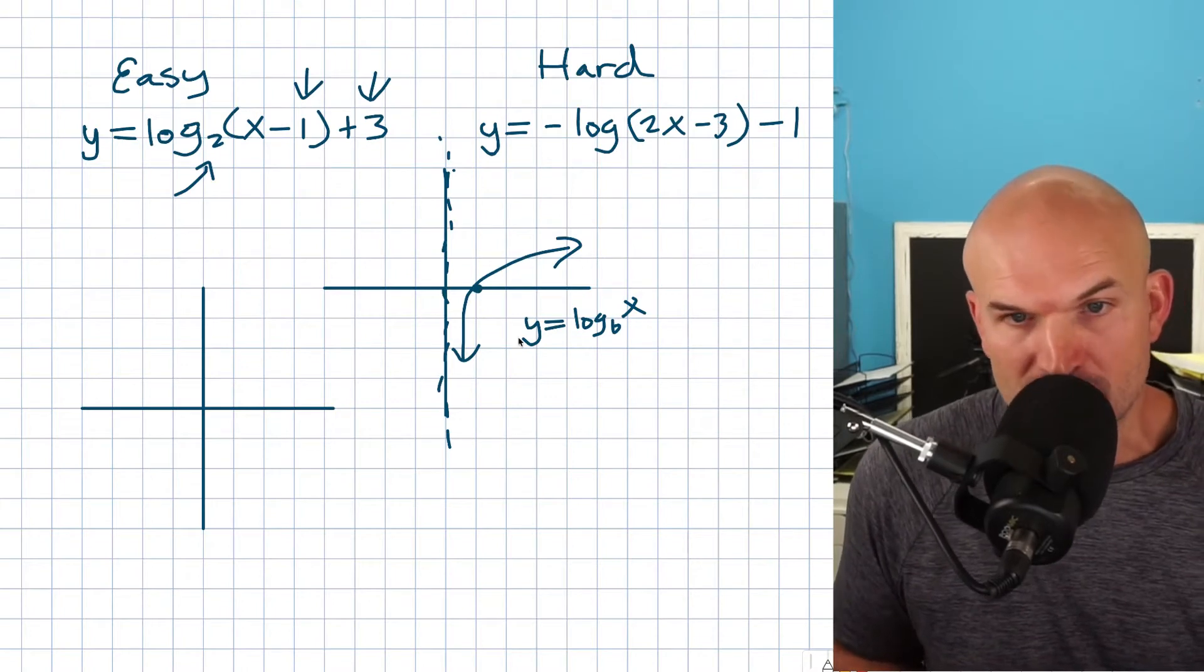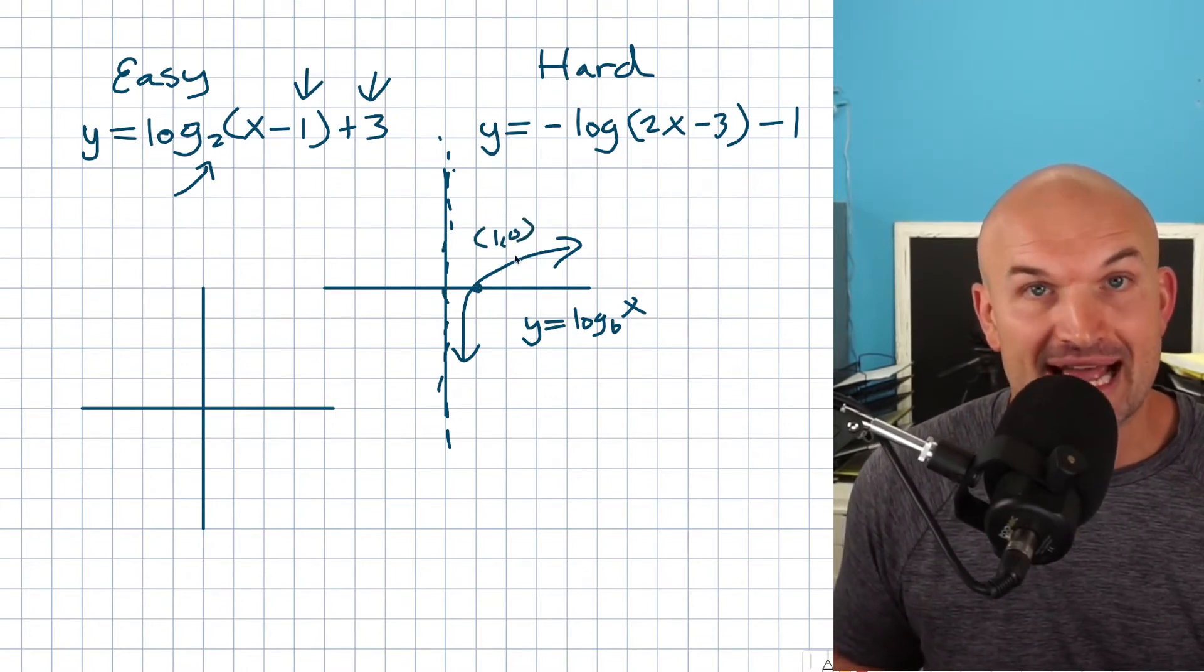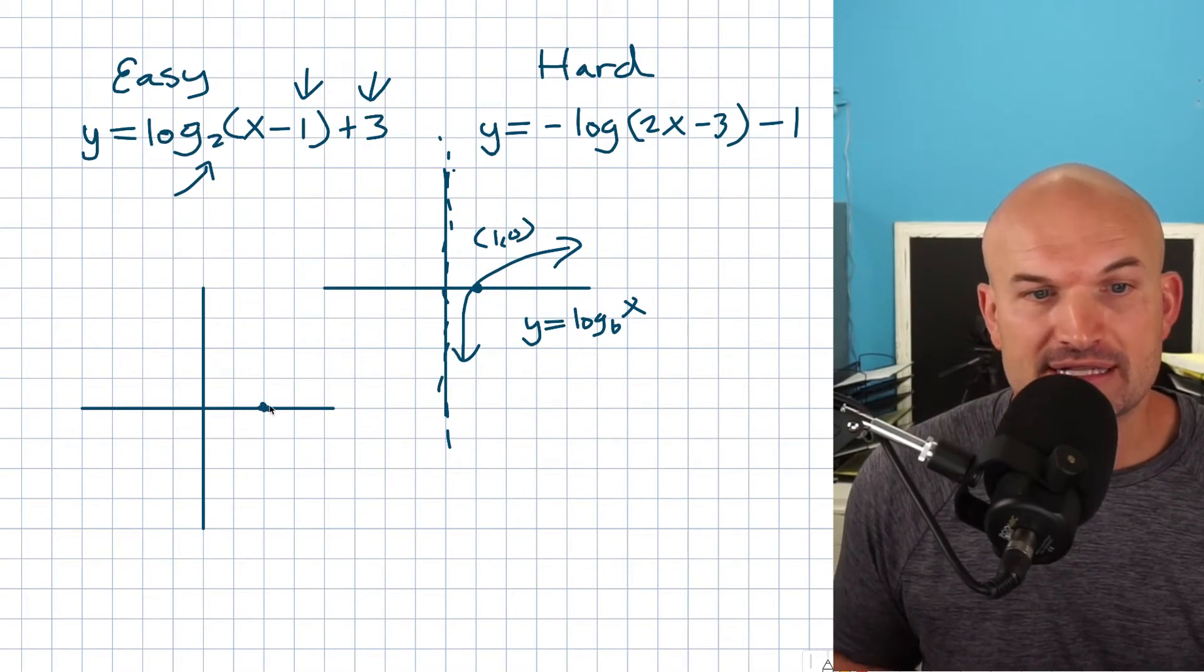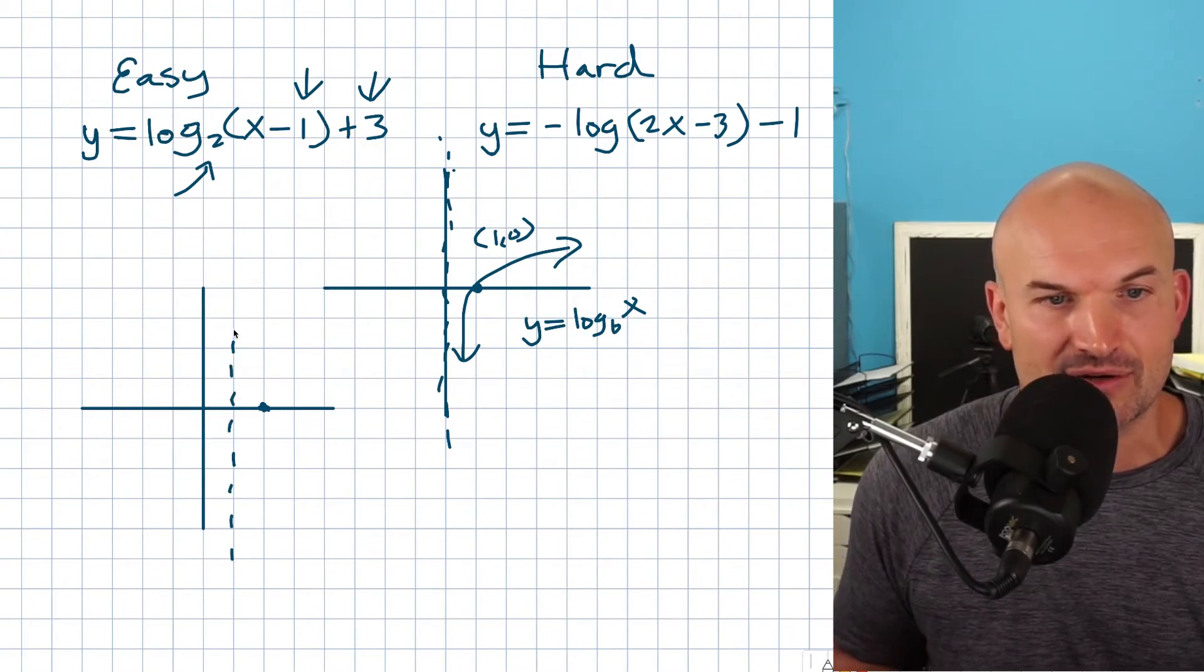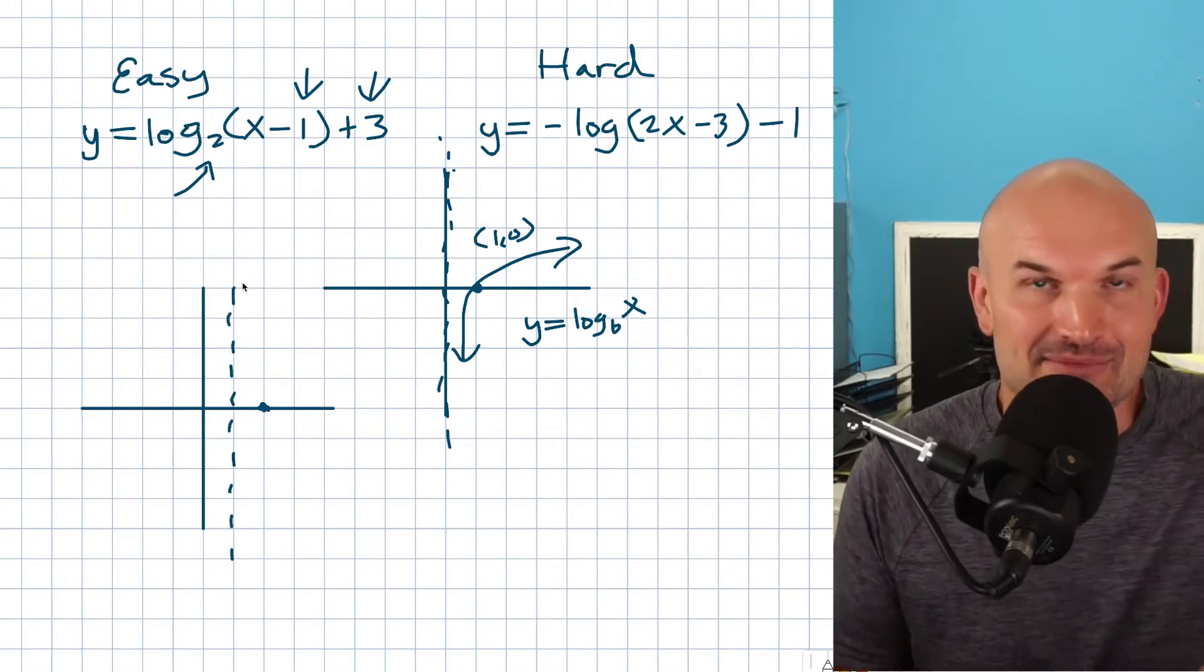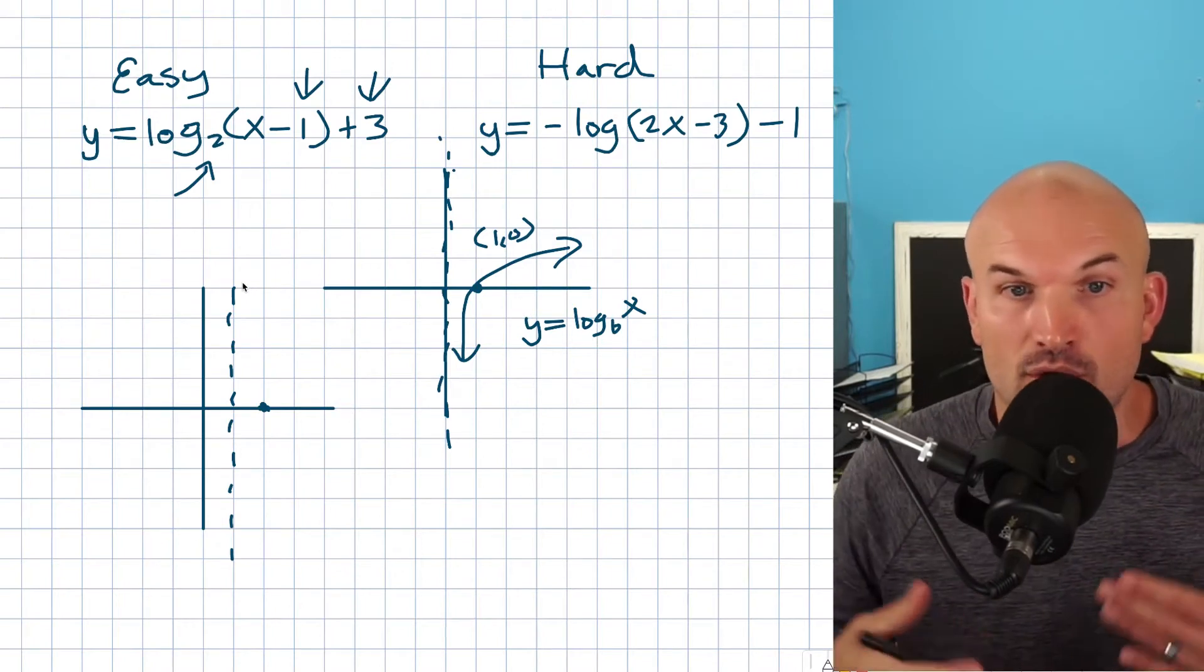All I'm simply going to do is take this original graph, which has this one point at 1,0—that's my x intercept—and I'm just going to move it over one unit. Now also my vertical asymptote has to move. That's one kind of big important thing that I think a lot of students forget. So if you're horizontally shifting your graph, make sure you're also horizontally shifting your vertical asymptote.